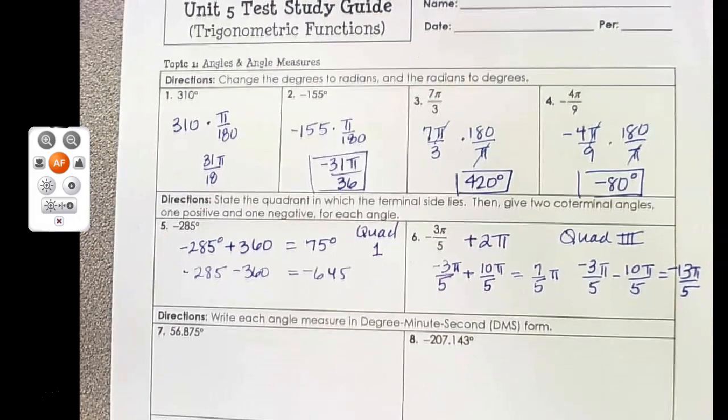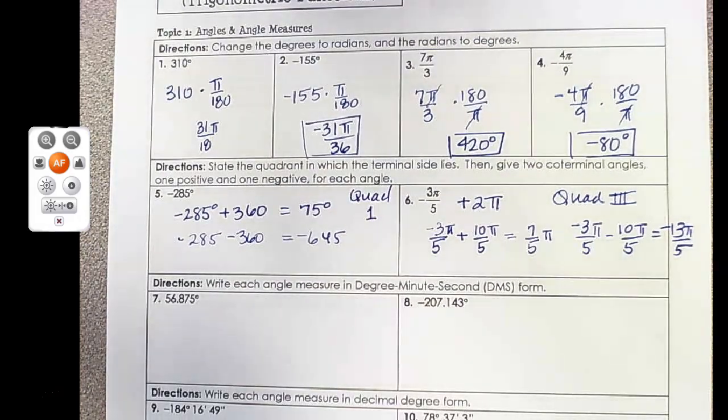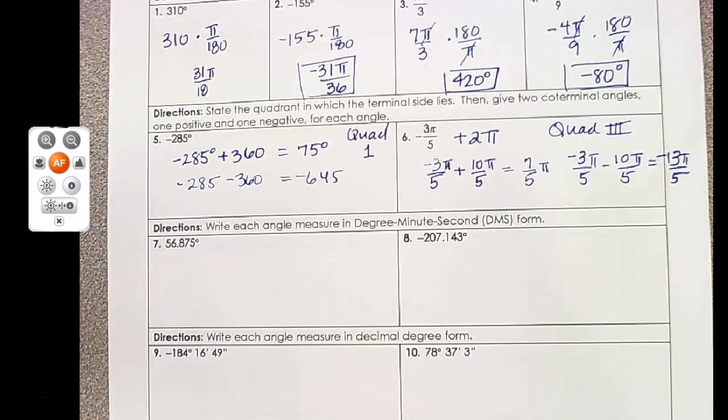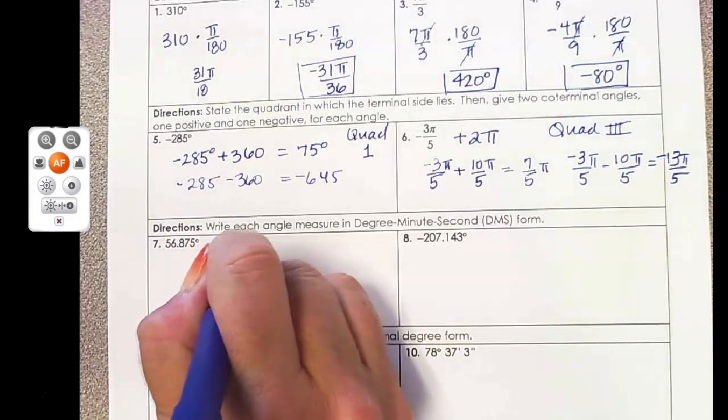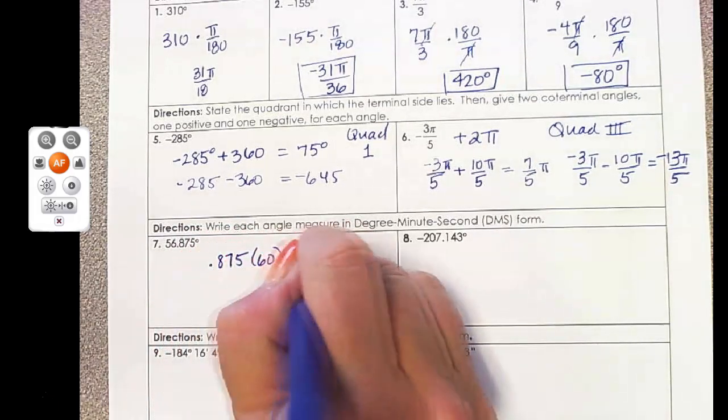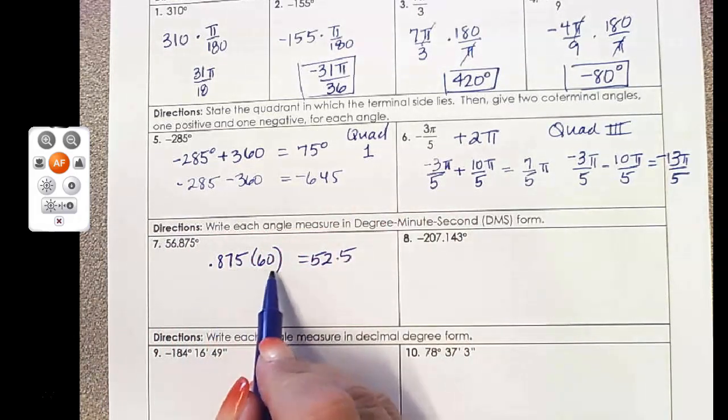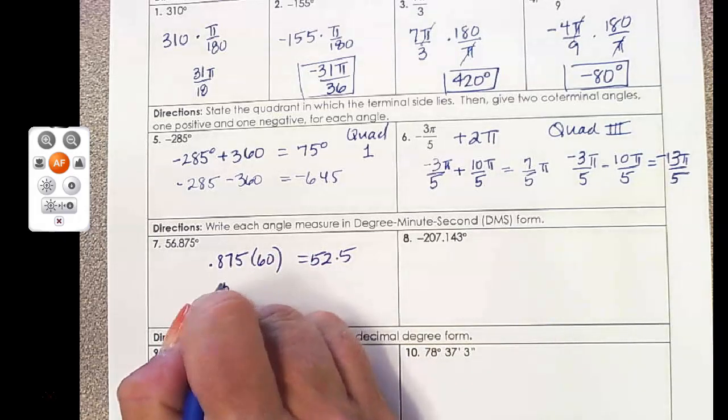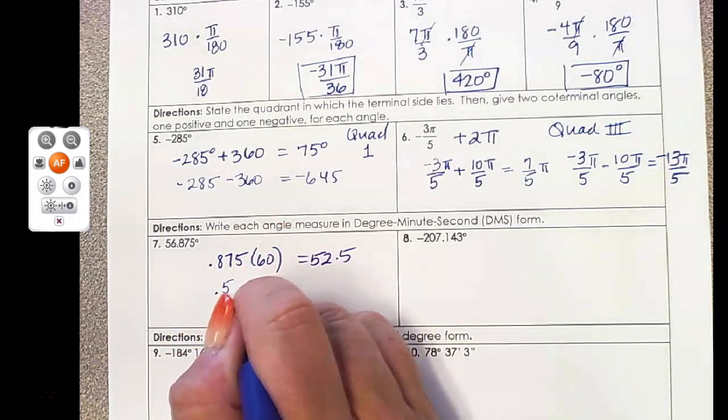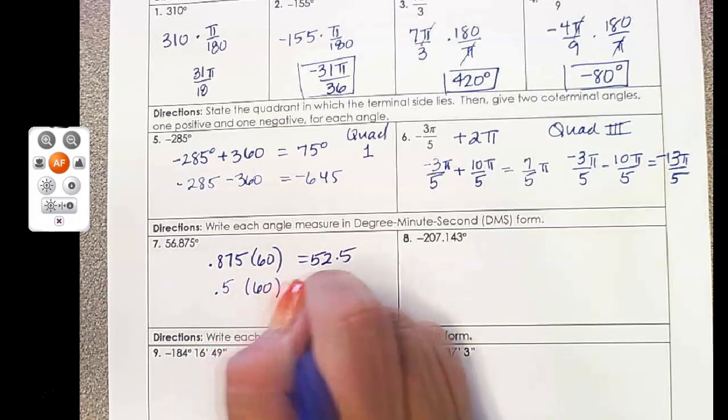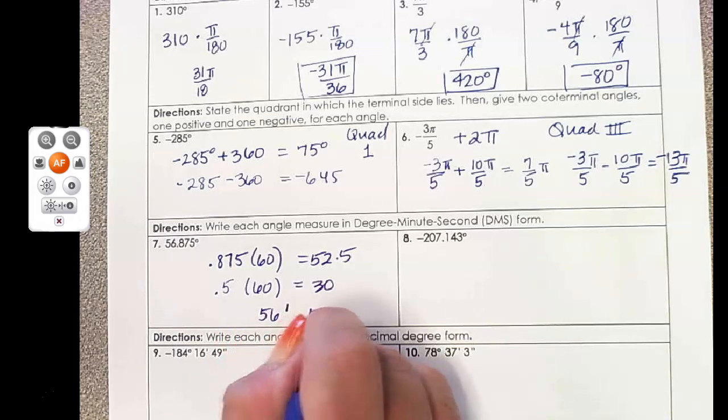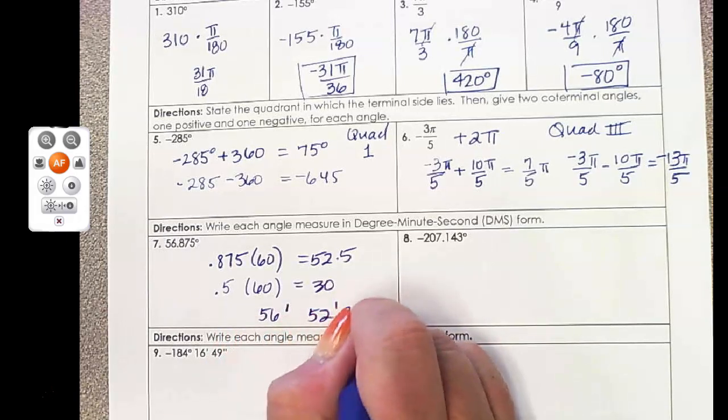To change into DMS notation, you guys showed me a method for using your calculator to do that. I'll just run through how to do it without a calculator. I'm multiplying my decimal times 60, because there are 60 minutes in a degree, and I get 52.5. Then I take the 0.5, and I multiply that times 60, and that tells me how many seconds there are. So 56 degrees, 52 minutes, and 30 seconds.